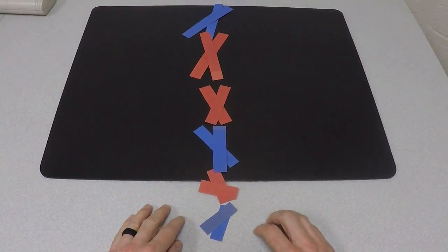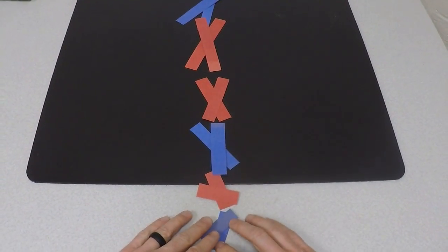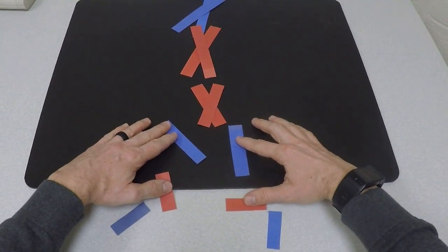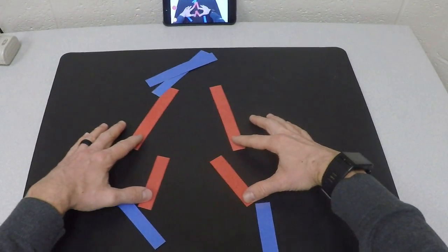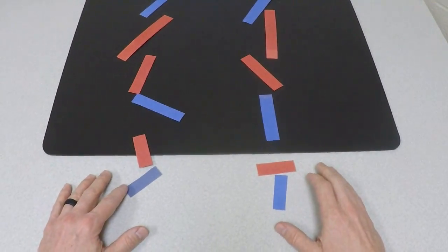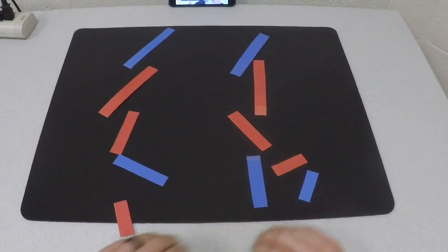In anaphase, the chromatids are going to separate from one another and they're going to do this all at the same time. I'm just doing it because I'm limited by my hands the way that I'm doing it, but we're going to have those chromatids moving away from one another to opposite poles of the cell or opposite sides of the cell.